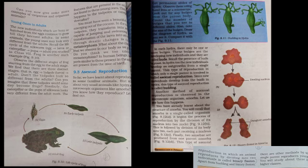Another method of asexual reproduction is observed in microscopic organisms, amoeba. You have already learned about the structure of amoeba. Amoeba have no definite shape. Amoeba is a single cell organism. It begins the process of reproduction by the division of its nucleus into two nuclei. This is followed by division of its body into two, each part receiving a nucleus. This type of asexual reproduction in which an animal reproduces by dividing into two individuals is called binary fission. Apart from budding and binary fission, there are other methods by which a single parent reproduces young ones. You will study about these in your higher classes.